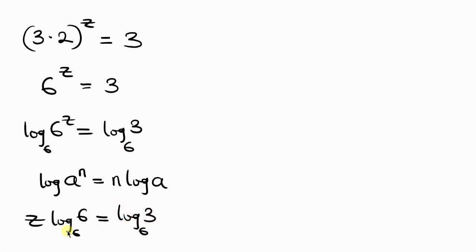That means this expression now becomes z log 6 base 6 and this is equal to what we have on the right which is log 3 base 6. Now from our previous page we see that whenever the number and the base are the same it is equivalent to 1. So this is z times 1 equal to log 3 base 6. Z times 1 is actually z, and this is equal to log 3 base 6.